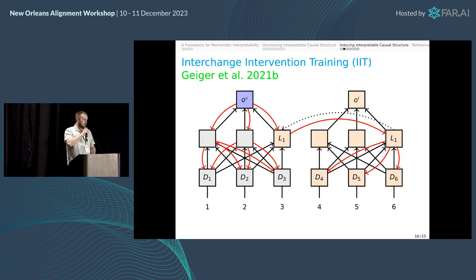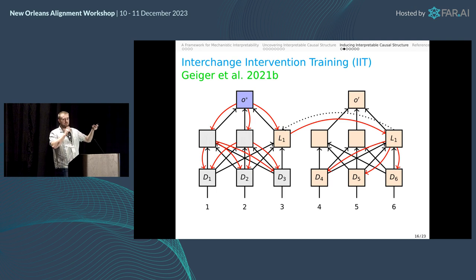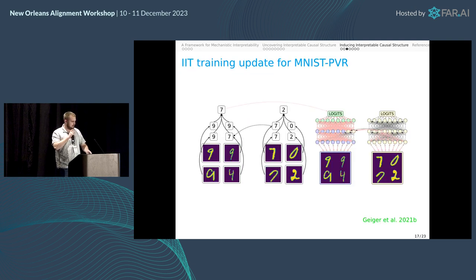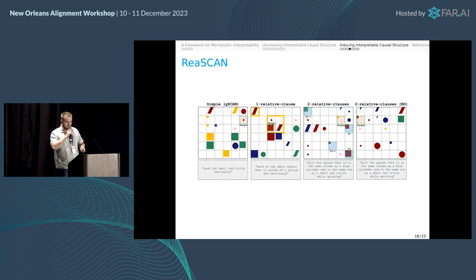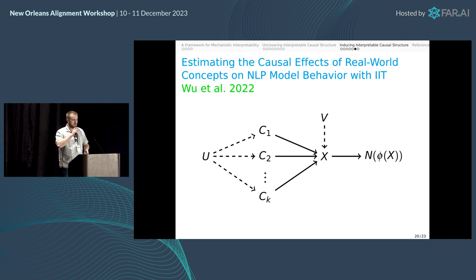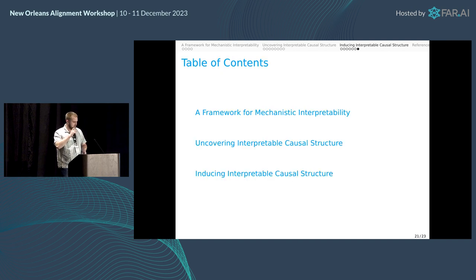We can also induce interpretable causal structure. In analysis mode, you do an intervention on the high-level model, do an intervention on the low-level model, and see whether they have the same output. But you can also use this as a training signal: given a high-level model, you specify where variables should be located in the representations, then do gradient updates to the low-level neural network to train it to localize pieces of information in different parts of the network. We demonstrated this on a complicated MNIST task, on a little agent navigating an environment, used it for model distillation with strong results, and also used it to estimate how networks would behave under counterfactuals.